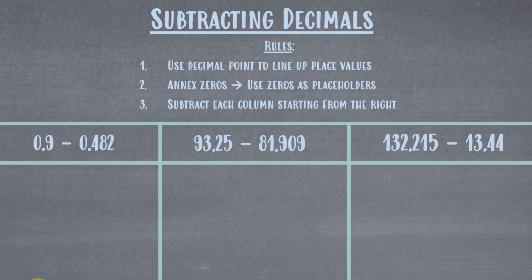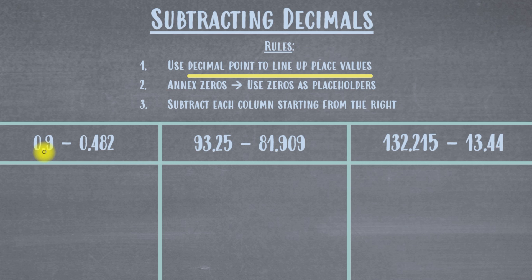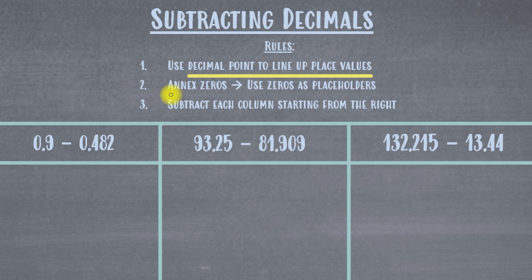That's really important. A lot of students just try to line up the decimal point but don't worry about the place values, but the place values are actually the most important part of this rule. The decimal point helps you line up one digit on top of the other digit. If you ever have two digits inside one column, that's a sign you might have done something wrong — go back and check your work. Step number two is to annex zeros, which is just a fancy math word meaning to use zeros as placeholders.